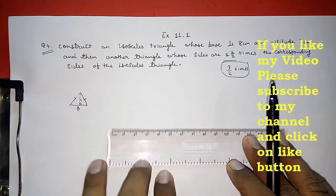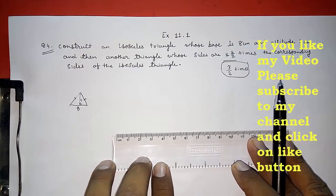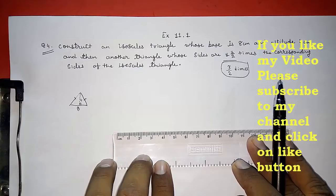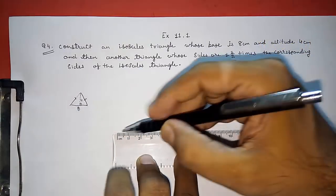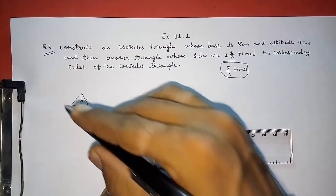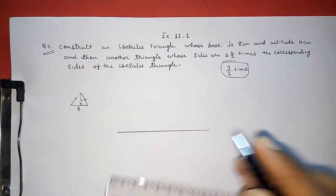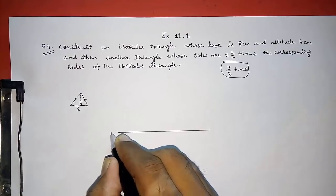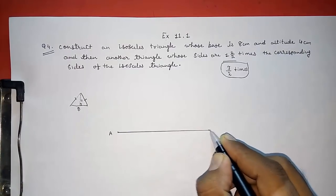So first we are going to construct an isosceles triangle. Let us draw. First a line segment of base 8 cm. So I have drawn this base 8 cm. You can see. Give this point name A, B.